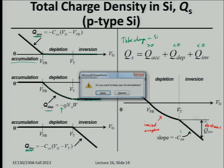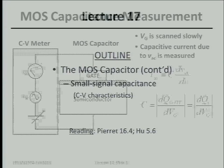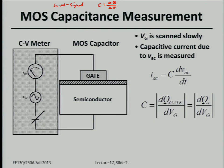Now we take the derivative of the charge-versus-voltage curve to find capacitance. This is small signal capacitance — it's the ratio of the change in charge to a given change in voltage applied to the gate. It's not Q over V; it's dQ/dV. That's what we mean by small signal.